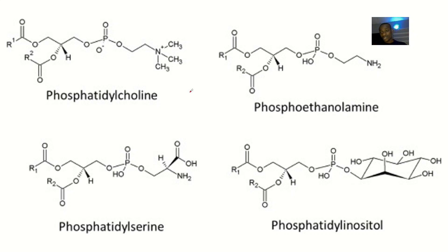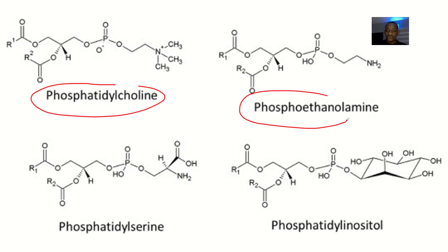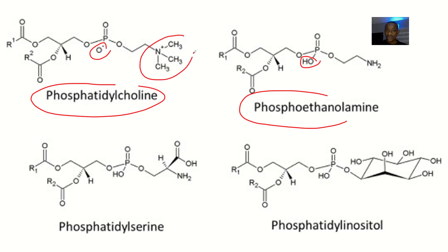Looking at the structure of phosphatidylcholine, compare it with the structure of phosphatidylethanolamine — try to spot the differences, like that game from school where you spot differences between two similar pictures. If you look carefully, there is an H here in phosphatidylcholine but no H in phosphatidylethanolamine, and the last compound at the end is also different. Those are the two differences between phosphatidylcholine and phosphatidylethanolamine.